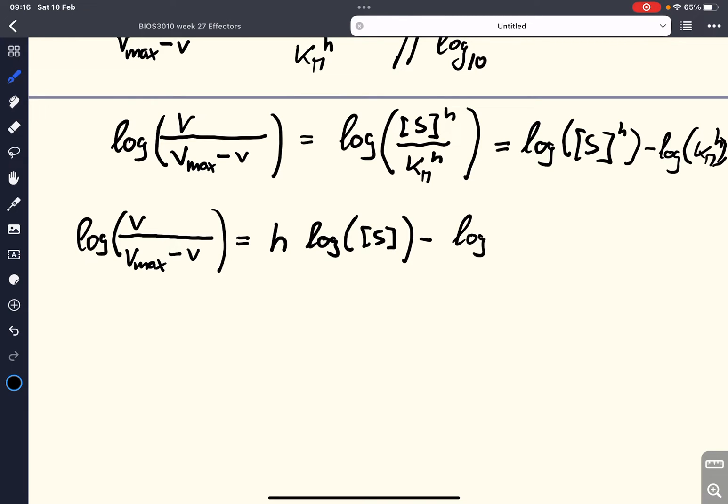Basically, we can say we've got log of V over Vmax minus V equals, and instead of log of S to the power of H, using the laws of logarithm, we can write H times log of the substrate concentration minus log of Km to the power of H.